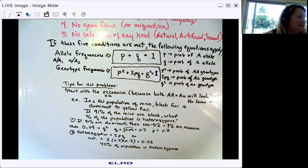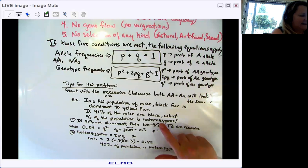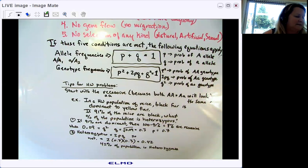So let's say in a Hardy-Weinberg population of mice, black fur is dominant to yellow fur. If 91% of the mice are black, what percentage of the population is heterozygous? Now black is dominant, so we don't want to start with the 91%. But if we know that 91% of the mice have the dominant phenotype, that means the other 9%, 100 minus 91, have to have the recessive phenotype. And that we can work with.